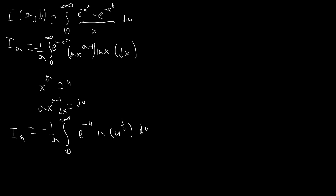We use properties of natural logs to bring the (1/a) all the way outside, giving us a factor of 1/a². The integral is now only in terms of u. This is a well-known integral: the integral from zero to infinity of e^(−u) · ln(u) du equals −γ, where γ is the Euler–Mascheroni constant. So we end up with I_a = γ/a².